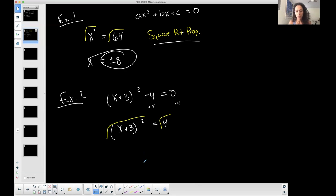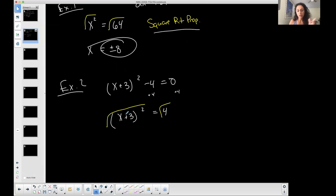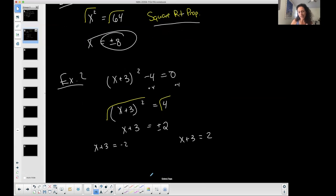But I'm not done after that. There's a little bit more work. So the square root of the quantity x plus three squared, the square root cancels with that basically, and I just get x plus three on the left. On the right, the square root of four is positive two, but because I'm using the square root property, I get a plus or minus. So I technically have two situations: x plus three is equal to negative two, and x plus three is equal to a positive two. But that's what I expect because I should have two solutions.